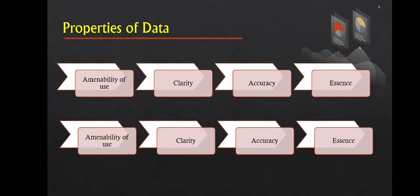Next is clarity — this implies that data must be shown in order to communicate the meaning of the matter. The sense that needs to be conveyed would be obscured if there isn't enough clarification. Next is accuracy — true, full, and accurate data are required. Data accuracy is a necessary property since data serves as a foundation for making decisions. They must be reliable in order to draw relevant conclusions.